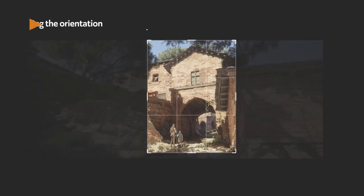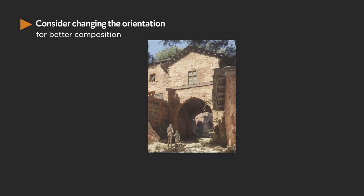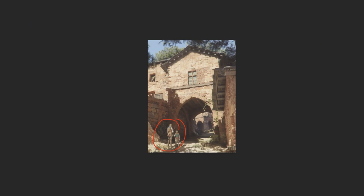Now when we crop it, this looks a lot more dynamic. The characters are nicely positioned in the lower left corner, we get to see the full view of the center building, and we get to see the tunnel, which gives a very nice sense of depth. We still have the buildings and rock on the side just a little bit to establish the depth and as a foreground element.